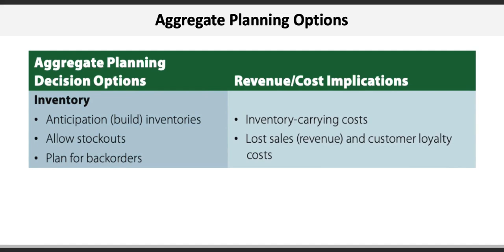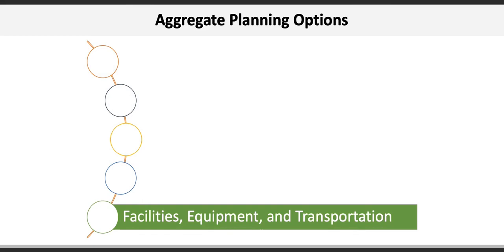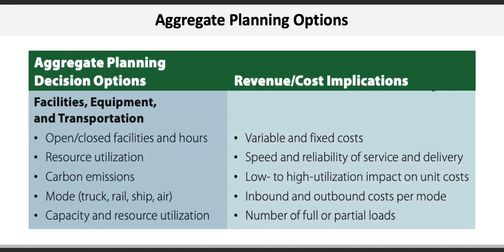Aggregate planning also involves management of facilities, equipment, and transportation. Decisions here include resource utilization, hours of operation, transportation modes, etc. These decisions can impact the cost structure of the firm in terms of fixed versus variable costs, impact on unit costs related to resource utilization, and inbound and outbound freight costs, among others.